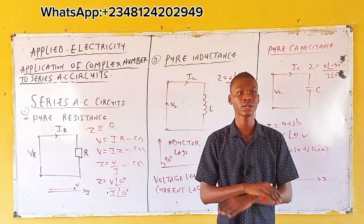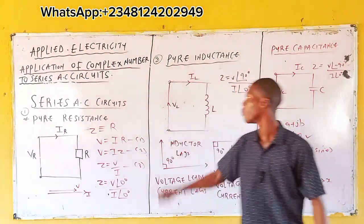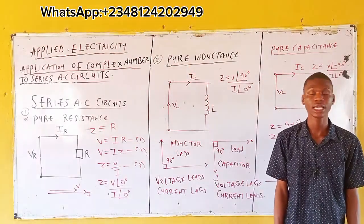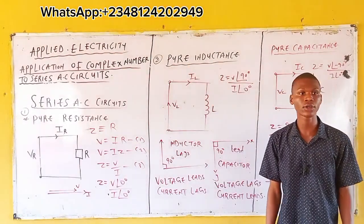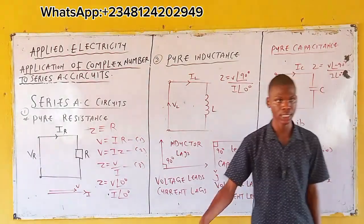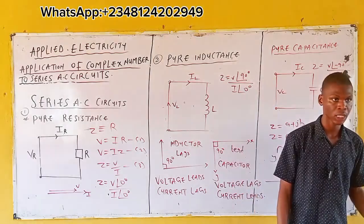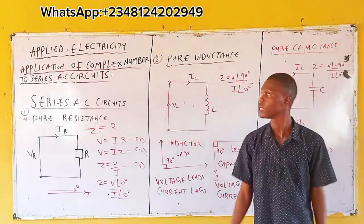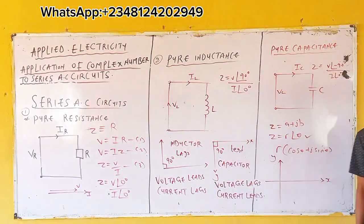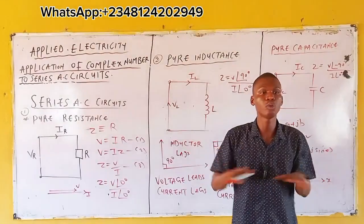For your pure resistor, they are in phase — neither lagging nor leading occurs in pure resistance. But for your pure inductance, one lags and the other leads: between your voltage and current, one is lagging while the other is leading. Similarly for pure capacitance, one is lagging and the other is leading.